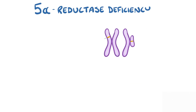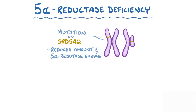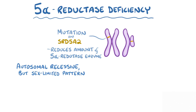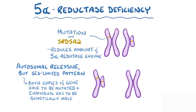In 5-alpha-reductase deficiency, there's a mutation in the gene SRD5A2, and that reduces the amount of 5-alpha-reductase enzyme that's made. The condition is inherited in an autosomal recessive but sex-limited pattern. This means that for the disease to appear, both copies of the genes have to be mutated, and the individual has to be genetically male, with one X and one Y chromosome in each cell, since dihydrotestosterone has no role in the development of genetically female individuals with two X chromosomes in each cell.